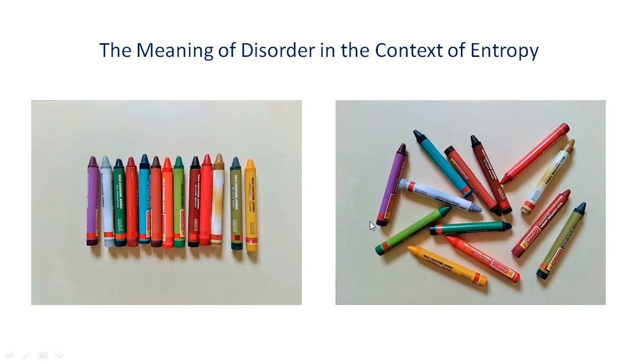You don't need to be a science student to answer this. Anybody will say that the one on the right where the objects are more randomly placed is more disordered. Does that mean that the equilibrium state on the right has more entropy? Well, no.